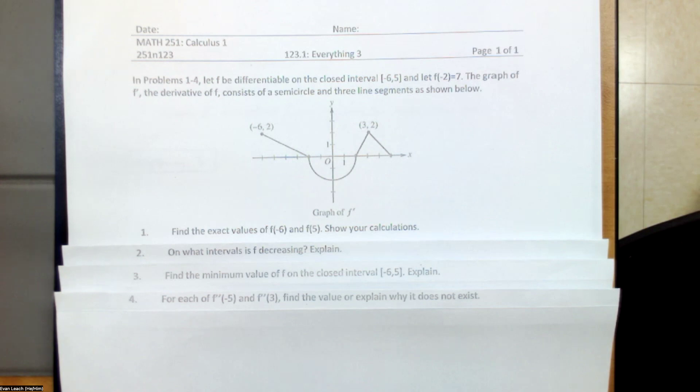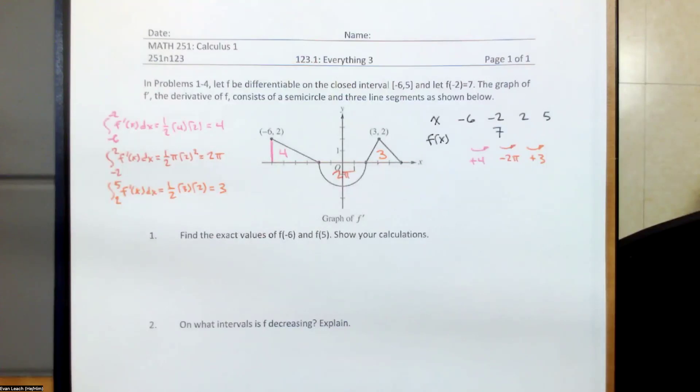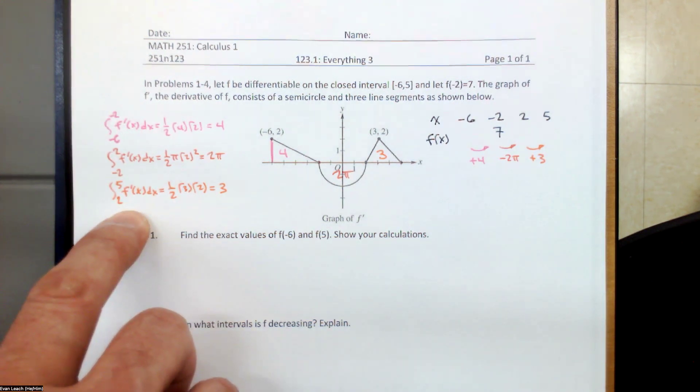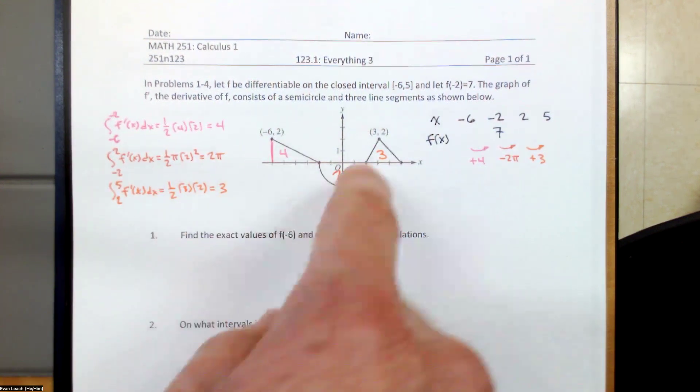So the things that we care about are how things are changing, and that would mean we would want to know the area. So the areas that we have here are 4 for that triangle on the left, 2π for that semicircle underneath, and 3 for the triangle on the right side, assuming that I calculated my areas correctly, which is a dangerous thing to assume. So over here on the left, I'm just saying I'm calculating definite integrals by calculating area. So these are just areas of these three regions.